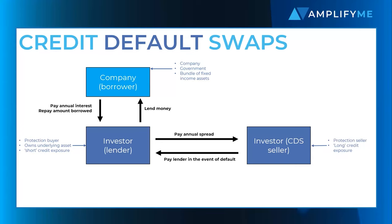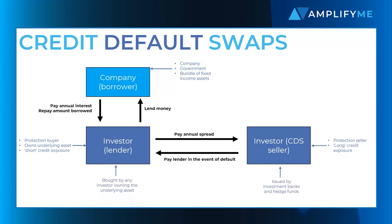Credit default swaps are issued by investment banks and hedge funds, and are bought by any investor owning the underlying assets. The premium or spread for a CDS tends to be less than 1% for investment grade issuers and over 10% for distressed issuers.